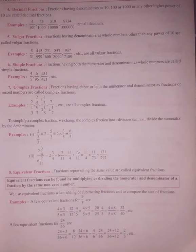Number one: decimal fractions. Fractions having denominators as 10, 100, or 1000, or any other higher power of 10, are called decimal fractions. यानि जिनके denominator दस, सौ, हजार, दस हजार इस तरीके के हों, वो सब fractions क्या कहलाते हैं? Decimal fractions कहलाते हैं.